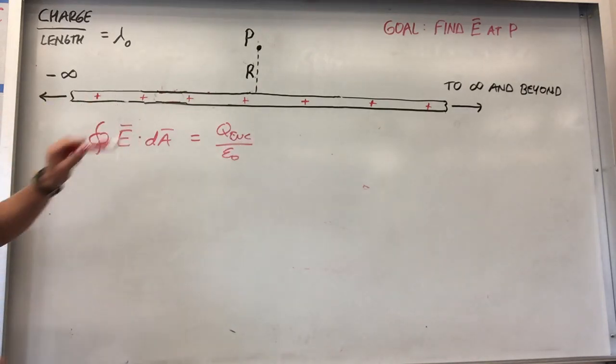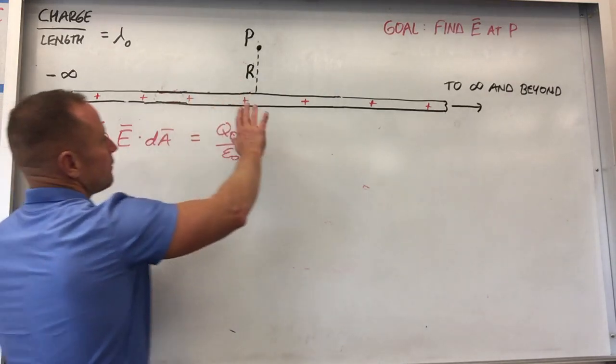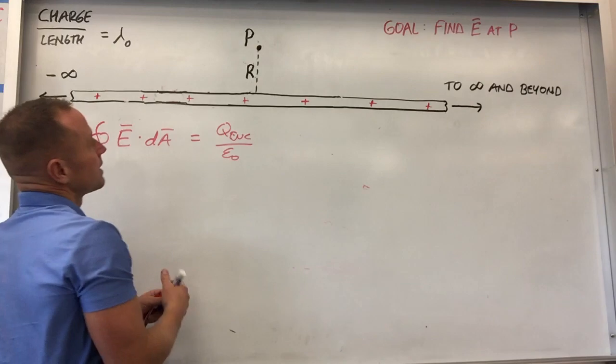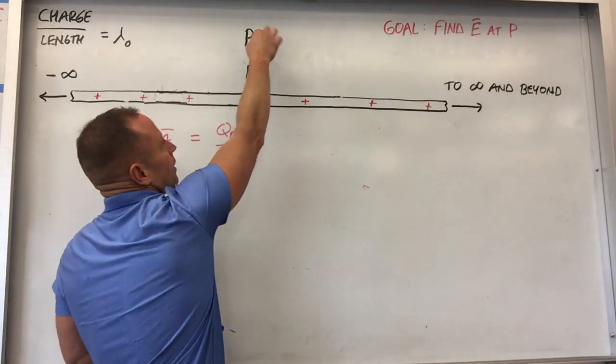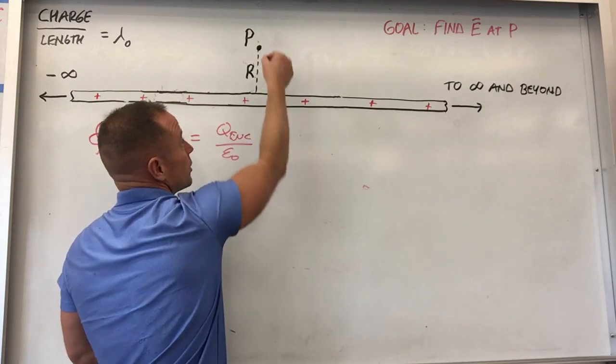Okay, so what we're going to do is if we have to come up with a surface for which this flux integral is easy to calculate. Well, it does take a little bit of vision about what the field looks like around this thing. Well, you know that the direction of field points in the direction that a positive charge will get pushed.